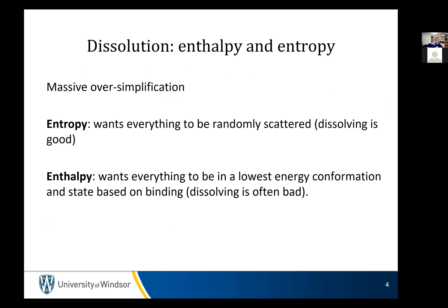All of reality is driven by a combination of enthalpy and entropy, and you just spent a year talking about enthalpy and entropy. Massive oversimplification: entropy wants everything to be randomly scattered, so dissolving is always good because you are scattering things and increasing randomness, which is always favorable — because chaos is good. And enthalpy wants everything to be in the lowest energy conformation and state based on binding. So lazy and chaotic is what nature wants to be. Dissolving is often bad for enthalpy, because you're often breaking up bonds, and they're comfortable and they don't want their bonds broken.